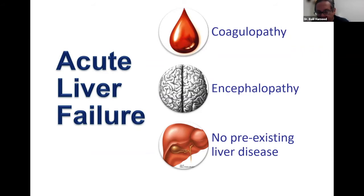There are patients who have elevated bilirubin and elevated liver enzymes — ALT and AST over 1000 — with coagulopathy, but who have not developed hepatic encephalopathy. For those, we use the term acute liver injury, not acute liver failure. In order to have failure, you need all three components, especially hepatic encephalopathy.